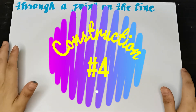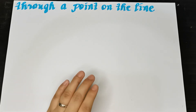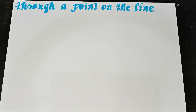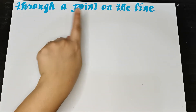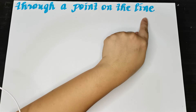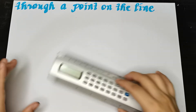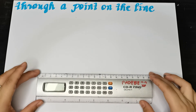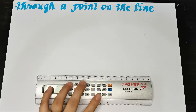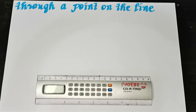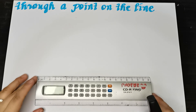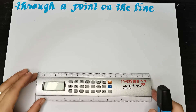So this time, what we are going to have will be constructing a perpendicular to a given line. Now, there are two constructions when it comes to constructing a perpendicular line to a given line. The first is through a point on the line, and the second is through a point not on the line.